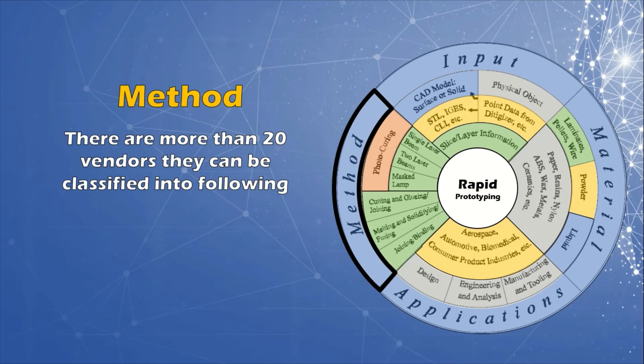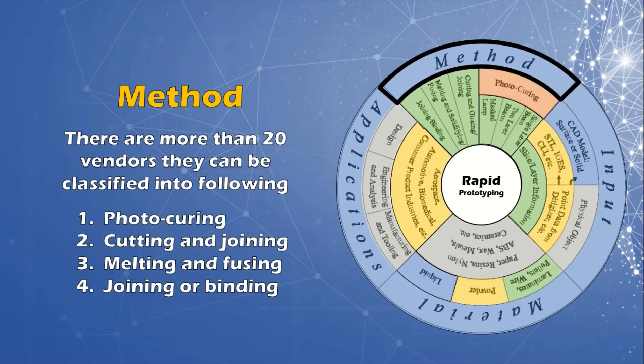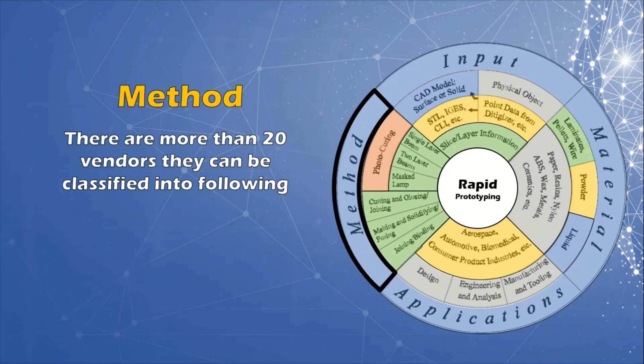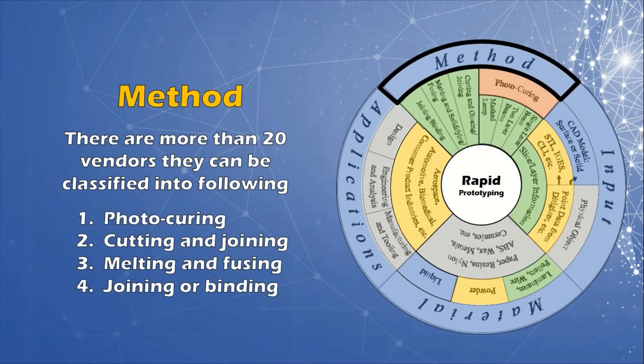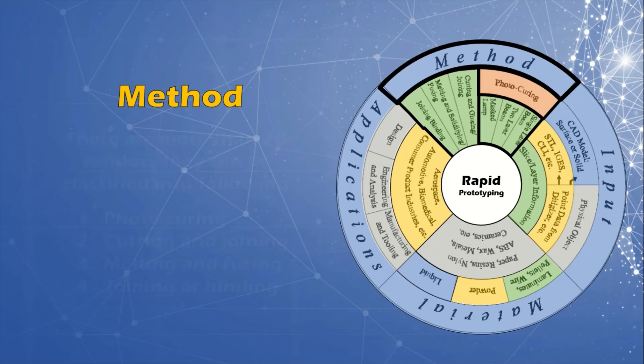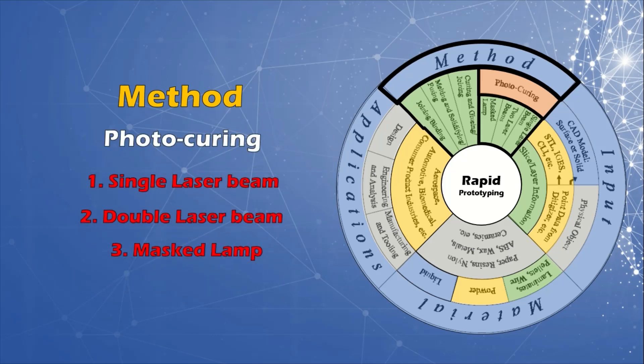Method: While there are currently more than 20 vendors for rapid prototyping systems, the method employed by each vendor can be generally classified into the following categories: photo-curing, cutting and joining, melting and fusing, and joining or binding. Photo-curing can be further divided into categories of single laser beam, double laser beams, and masked lamp.